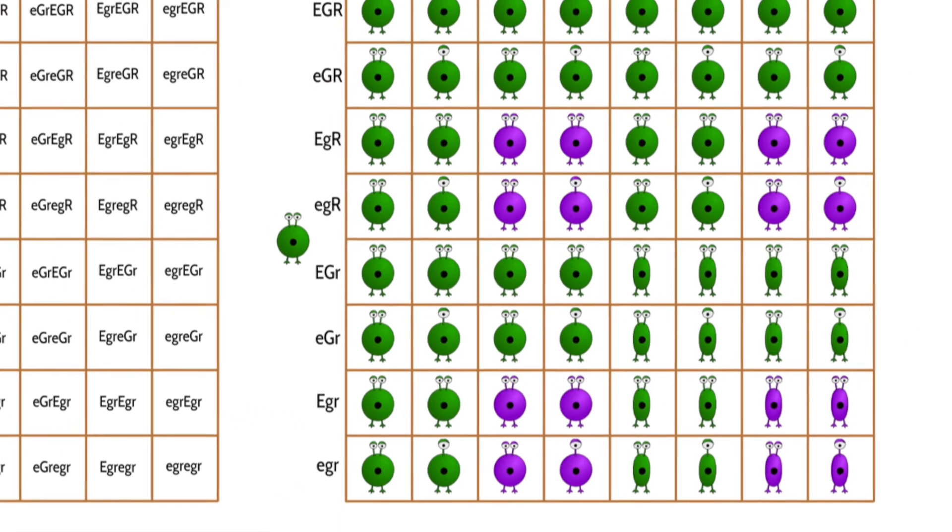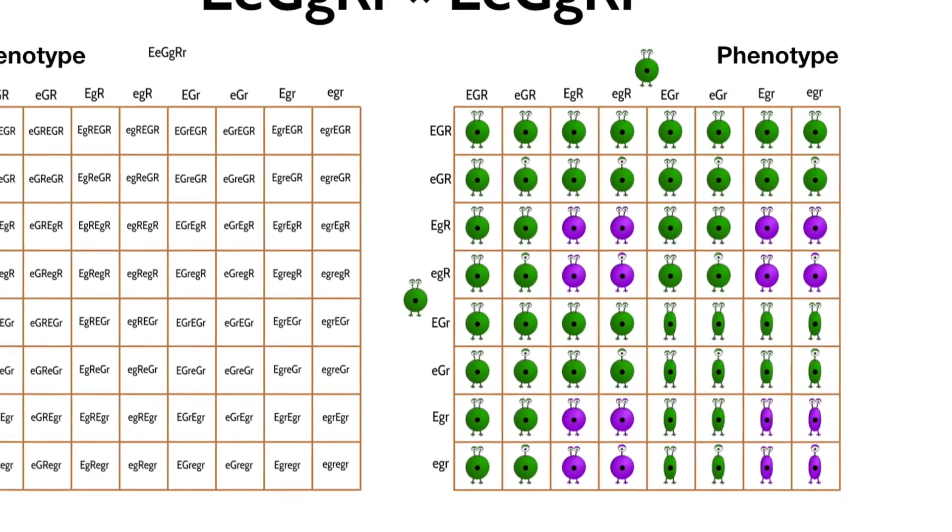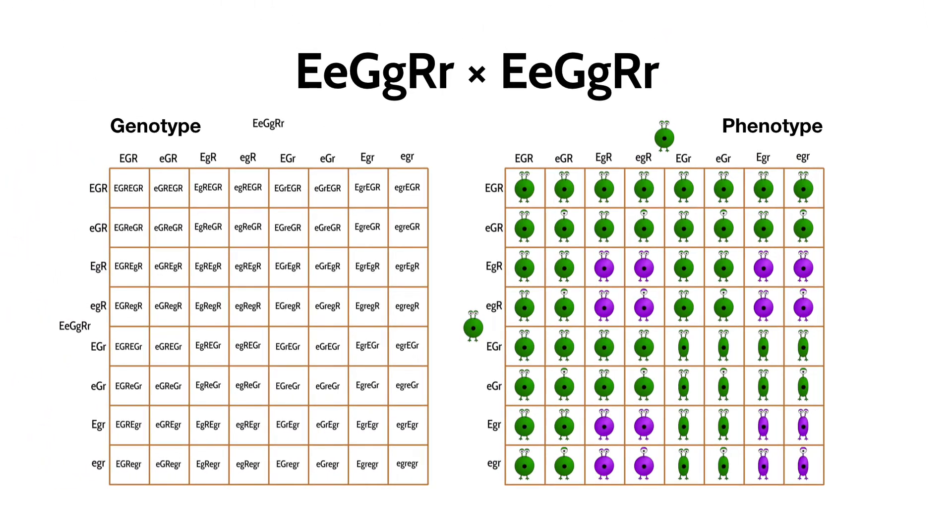And in Mendelian genetics, you can keep adding traits, making larger and larger Punnett squares that can track three, four, or more traits at a time.